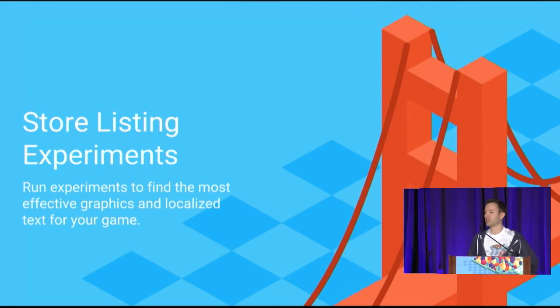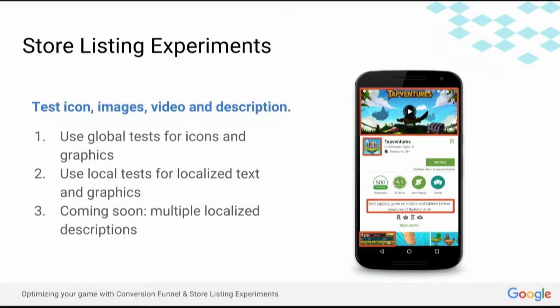Now to challenge number three: how to grow the game's user base. Store listing experiments allow you to find the most effective graphics and text for your game. Absolutely no coding is required, and it takes only a few clicks to launch store listing experiments in the Play developer console. You can test icons, images, videos, and text descriptions. Here are three recommendations: use global tests for icons and graphics, use local tests for localized text and graphics, and coming soon, you can run multiple localized description tests at the same time.